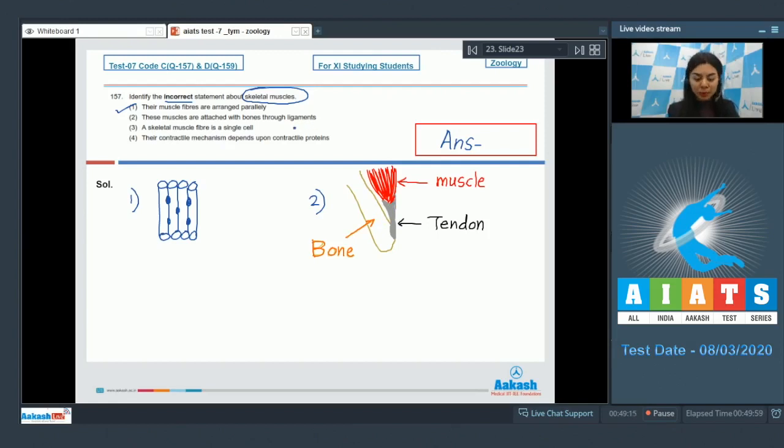A muscle shown in red here attaches to the bone with the help of tendon and not ligament, whereas one bone is connected to the other bone through ligaments. So this is incorrect. Option three, a skeletal muscle fiber is a single cell - this is true. Each of this fiber is a single cell and remember it's multi-nucleated with their nuclei peripherally located. So this is also a true statement. Option four, their contractile mechanisms depend upon contractile proteins.